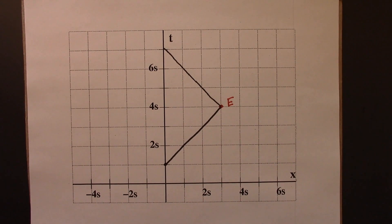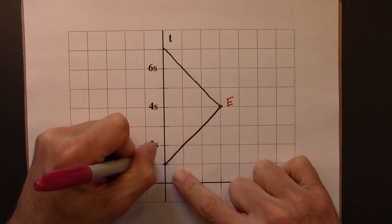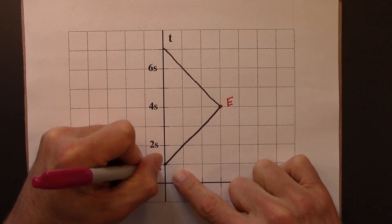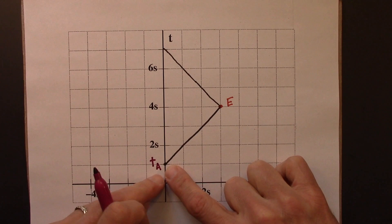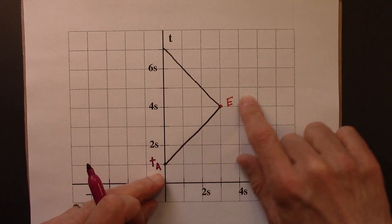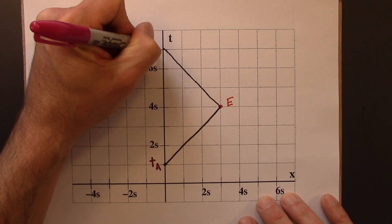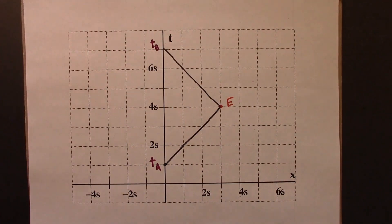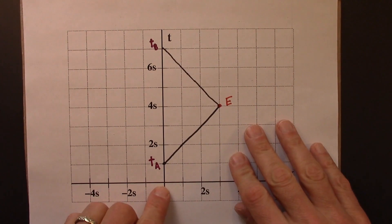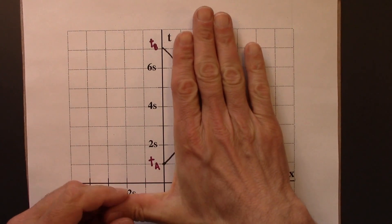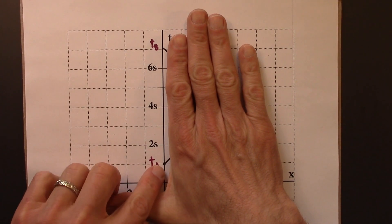I'm going to call this initial time TA, so that's the time when we send the light flash out. And then TB will be when it returns to us.